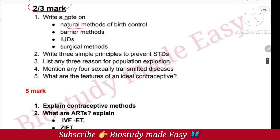Natural methods of birth control include lactational amenorrhea and coitus interruptus. These are three-point answers covering natural birth control methods.